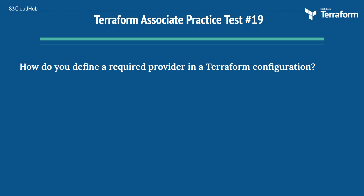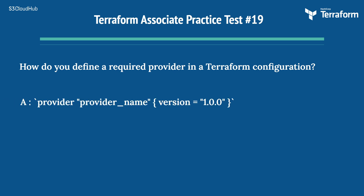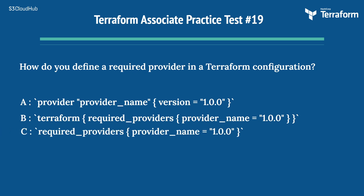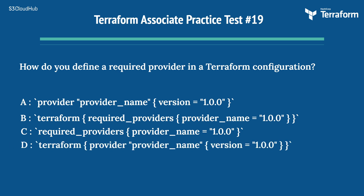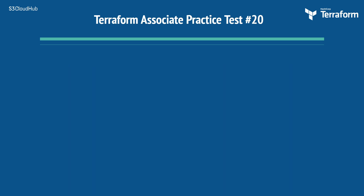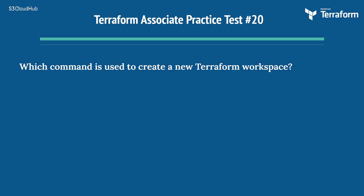The nineteenth question: how do you define a required provider in a Terraform configuration? Options are: A) provider provider_name version = 1.0.0, B) terraform required_providers provider_name = 1.0.0, C) required_providers provider_name = 1.0.0, D) terraform provider provider_name version = 1.0.0. The right answer is Option B, terraform required_providers provider_name = 1.0.0. This is the correct syntax to define a required provider in a Terraform configuration.